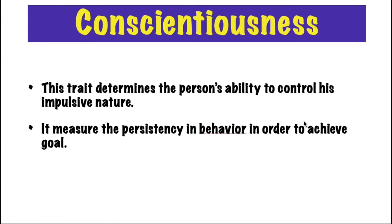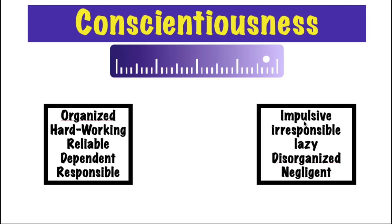The next dimension is Conscientiousness, which determines how well a person can control their impulses and behavior. A person with a high score is organized, hard-working, reliable, dependable, and responsible. A person with a low score is impulsive, irresponsible, lazy, disorganized, and negligent.